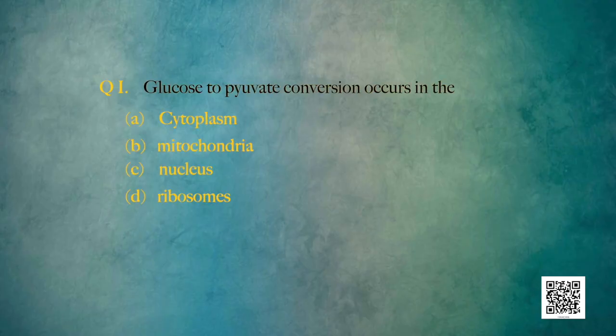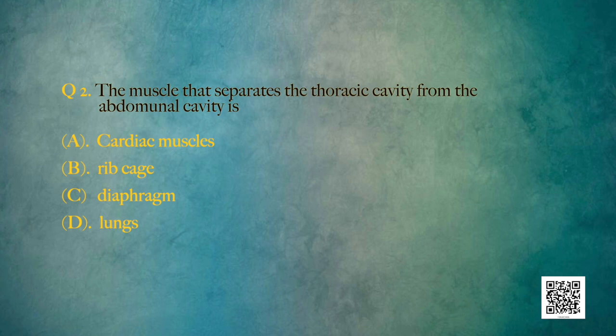Let's have a quick quiz. Question 1: Glucose to pyruvate conversion occurs in — cytoplasm, mitochondria, nucleus, or ribosomes? The answer is cytoplasm. Question 2: The muscle that separates the thoracic cavity from the abdominal cavity is — triadic muscles, ribcage, diaphragm, or lungs? The answer is diaphragm.